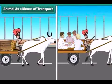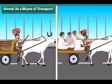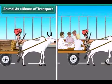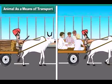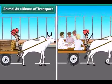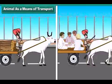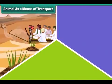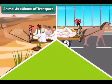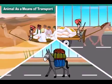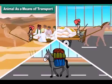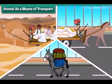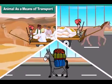Animal driven vehicles such as bullock carts are used to carry straw, crops and sometimes even people. Animals like camels, horses and donkeys carry goods and people. So animals play an important role in transport.